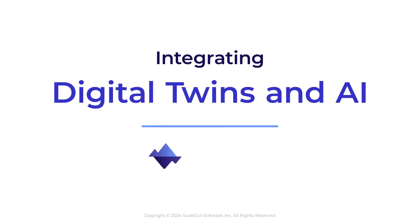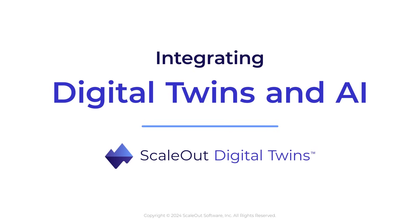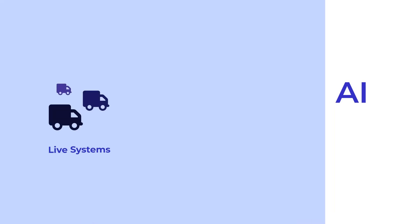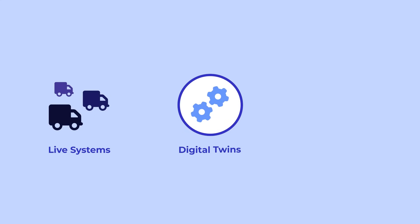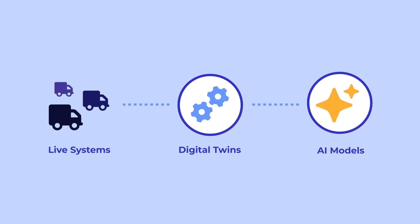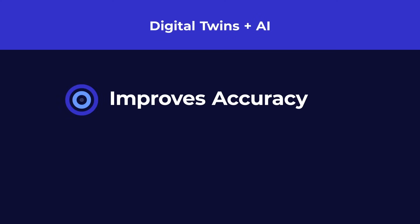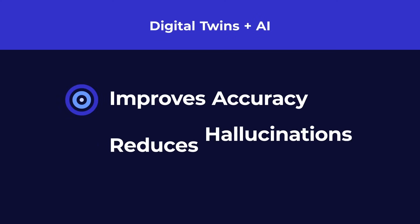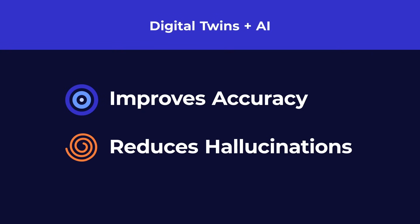ScaleOut Digital Twins is incorporating the power of AI to make real-time digital twins even smarter. Our technology enables digital twins to provide real-time data to large language models from live systems. This integration improves the accuracy of AI responses and reduces errors or hallucinations that can occur with generalized AI models.